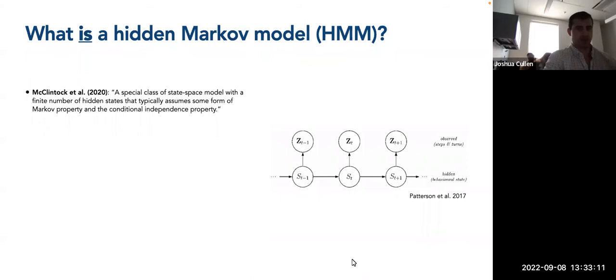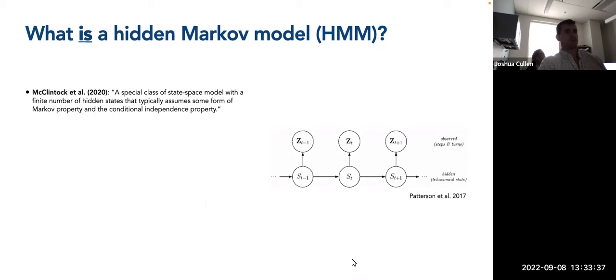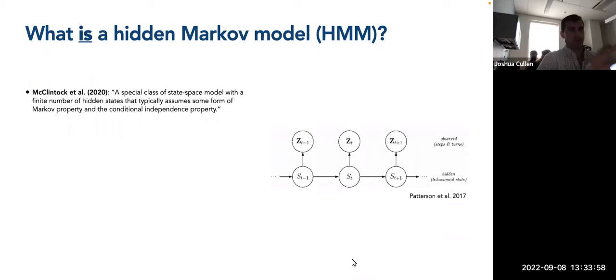What is a hidden Markov model? There's a recent review paper by Michelot and colleagues that's really good if you're interested. They define hidden Markov models as a special class of state-based model with a finite number of hidden states that typically assume some form of Markov property and a conditional independence property. Basically, it's a state space model where there's a discrete finite number of states, whereas a state space model assumes some continuum — like a gamma parameter between zero and one — without defining specific discrete states.